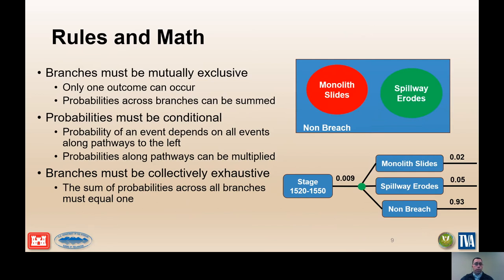The basic event tree rules are summarized on this slide. Branches must be mutually exclusive, meaning only one outcome can occur. Therefore, the probabilities originating from a single node can be summed, and the sum must be equal to one. Because the sum must be equal to one, the branches are collectively exhaustive.